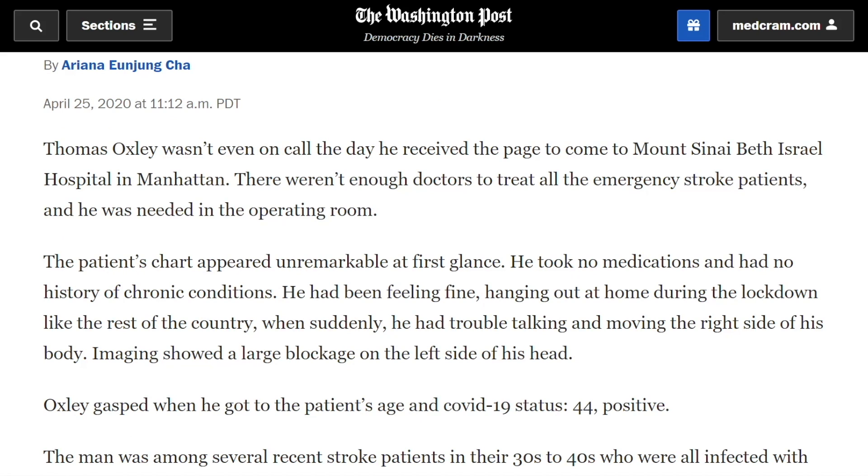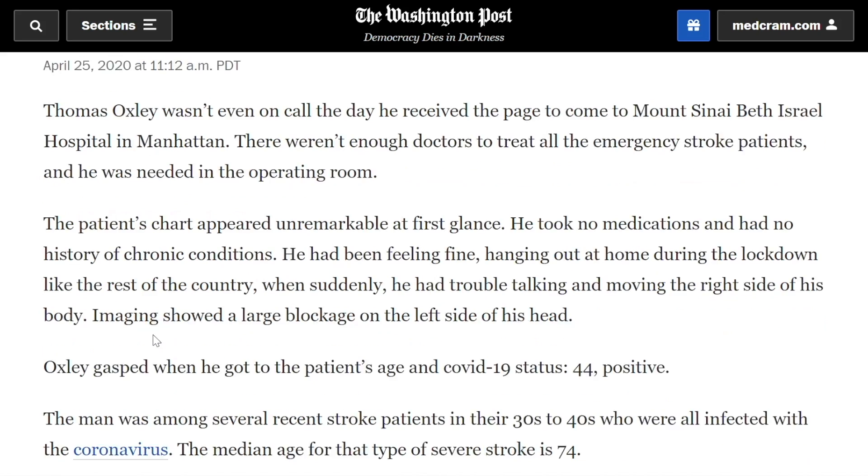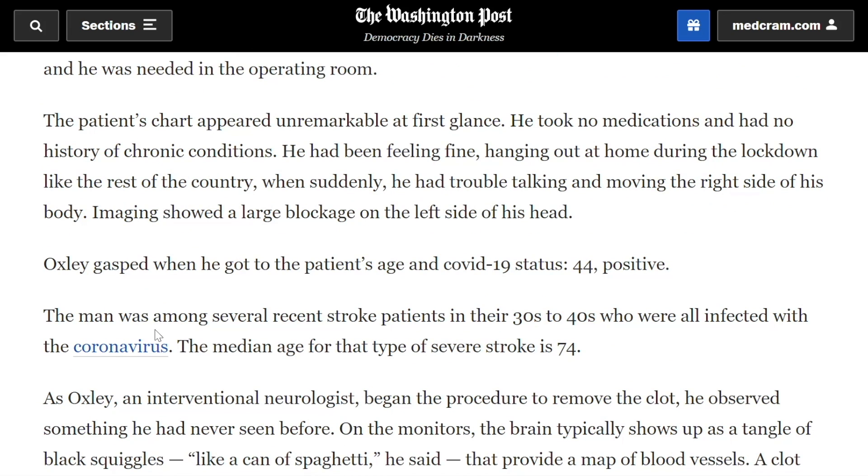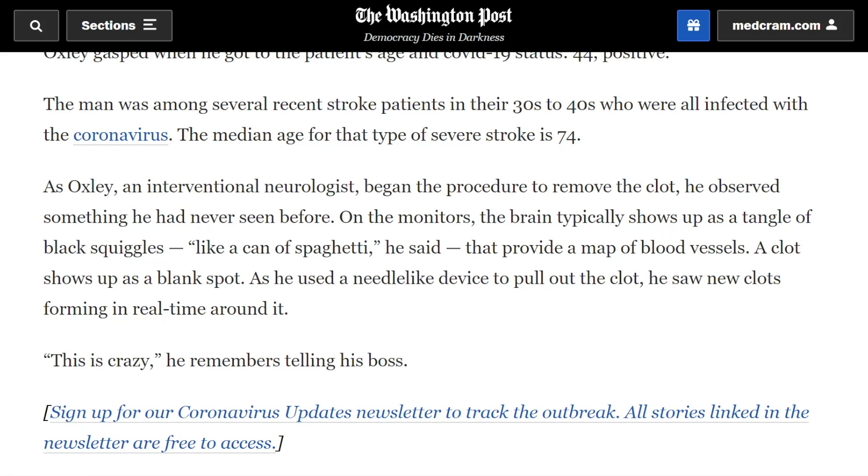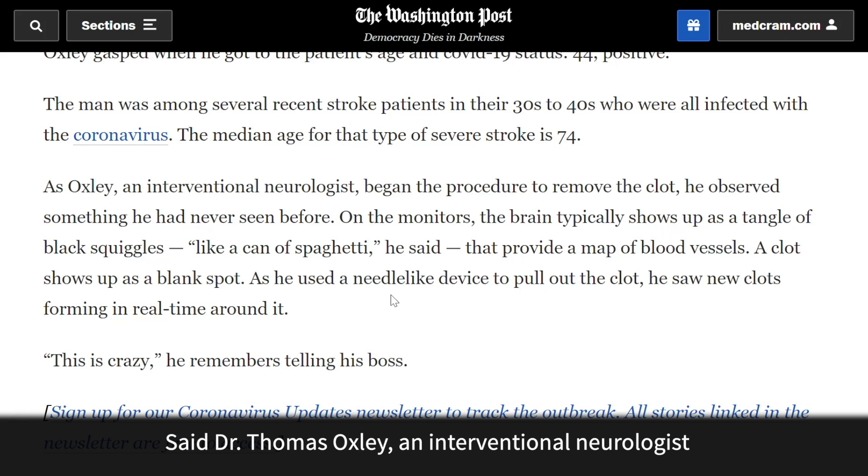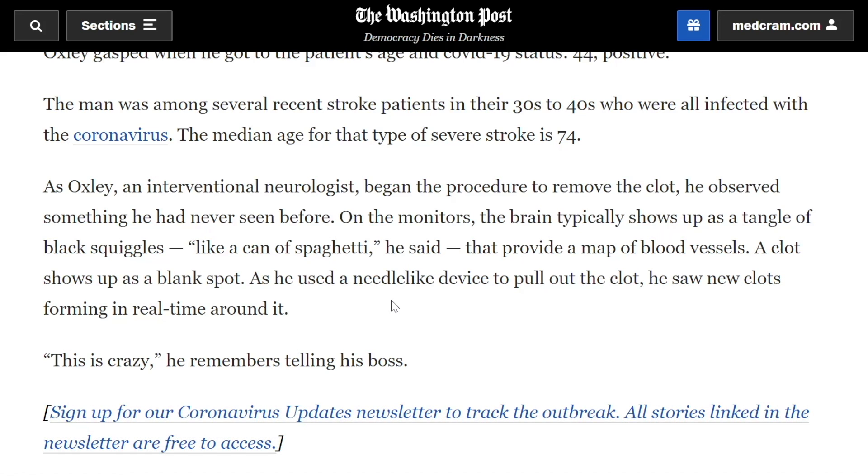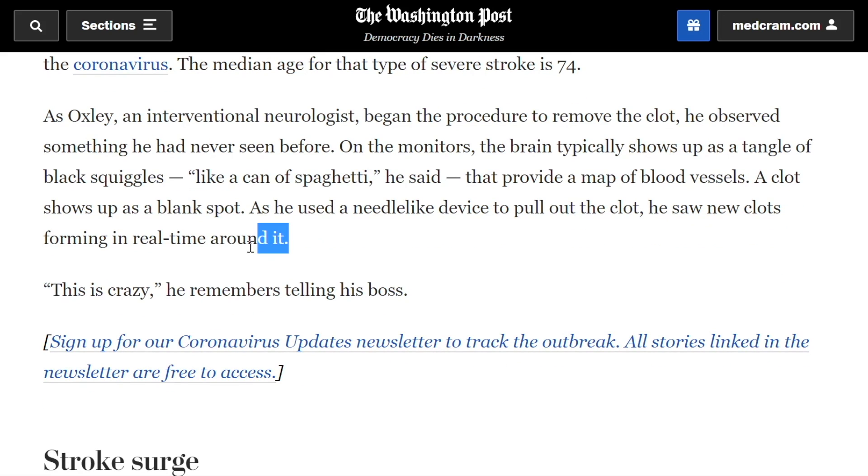They talk about how this patient came into the hospital and had a stroke, and they were trying to remove the clot using the technology that they have. He observed something that he had never seen before. On the monitors, the brain typically shows up as a tangle of black squiggles, like a can of spaghetti, that provide a map of blood vessels. A clot shows up as a blank spot, and he used the needle device to pull the clot out. He saw new clots forming in real time around it. And the question is, why is that happening?